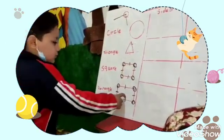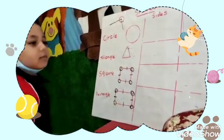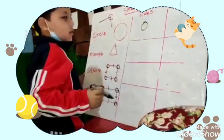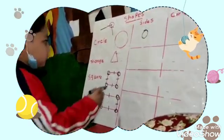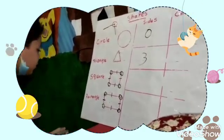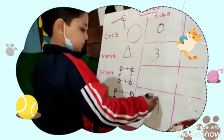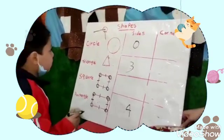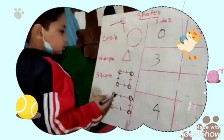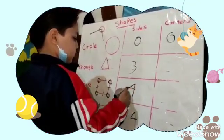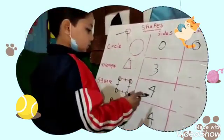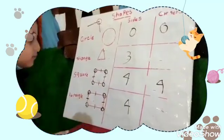Circle? Rectangle? Triangle? Okay. How many sides for circle? How many sides for triangle? How many sides for rectangle? Four. How many corners for circle? How many sides for square? Four. How many corners for square? Four. How many corners for triangle?